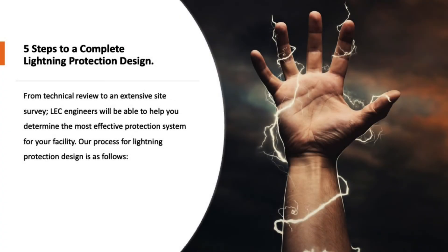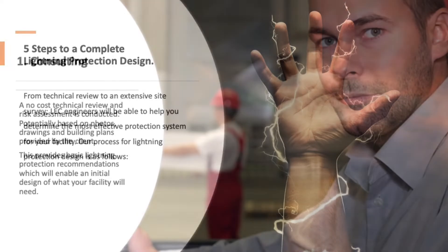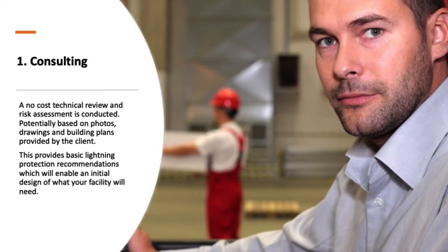Five steps to a complete lightning protection design: from technical review to an extensive site survey, LEC engineers will be able to help you determine the most effective protection system for your facility. Step one: consulting. A no-cost technical review and risk assessment is conducted, potentially based on photos, drawings, and building plans provided by the client. This provides basic lightning protection recommendations which will enable an initial design of what your facility will need.